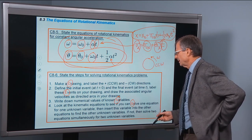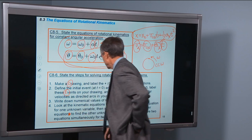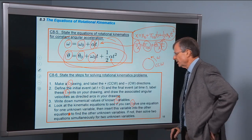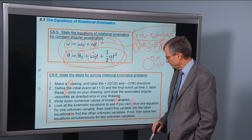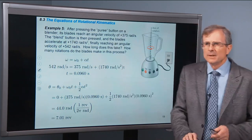Then insert this variable into the other equation to find the other unknown variables. If not, then solve two equations simultaneously for two unknown variables. We've talked about that a little bit too. Let's do an example.